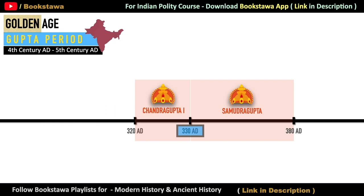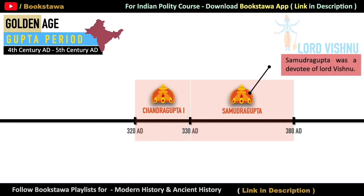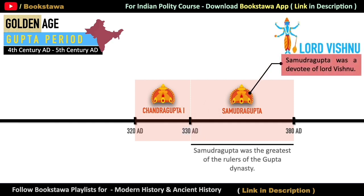It has also been mentioned that there was a fight between Samudragupta and a prince named Kacha to become the king after Chandragupta I. And in such a situation, Samudragupta became the king only after defeating Kacha. Samudragupta was a devotee of Lord Vishnu and is considered to be the greatest ruler of the Gupta dynasty.